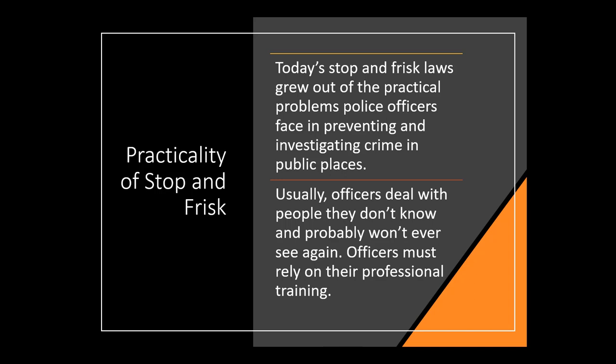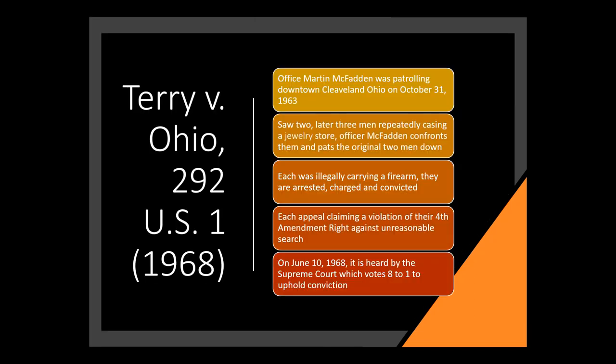The most important case is Terry v. Ohio. We have Officer McFadden, a veteran detective with about 39 years on the force and 35 as a detective, who was assigned to patrolling an area in Cleveland, Ohio. In 1963, he's standing on the corner of Huron and Euclid Avenue, and he sees two men. He's aware he's in downtown Cleveland where there are shoplifters and pickpockets, and with his long experience he notices these two men seem to be acting suspicious.